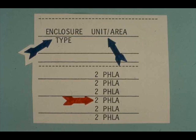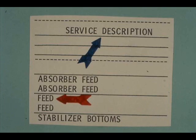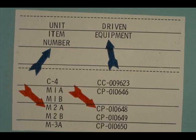The next two column headings are enclosure type and unit or area. The enclosure type of our example is not given. The unit is 2 PHLA — that is, number 2 power former. The next column heading is service description; the motor we are following is in feed service. The last two column headings are unit item number and driven equipment. This motor has the unit identification number M2A. It drives a centrifugal pump, yard number 10648.